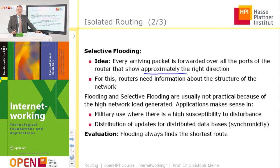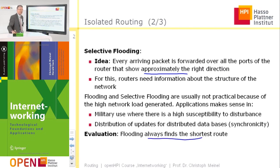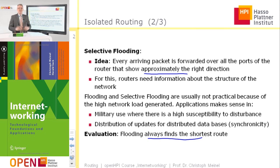When we evaluate flooding, we have to say that flooding always finds the shortest route. A simple proof for this assertion: if you send a packet along all possible paths, then of course you also send it along the shortest path. And the shortest path is the one on which the packet reaches its destination at the earliest moment.